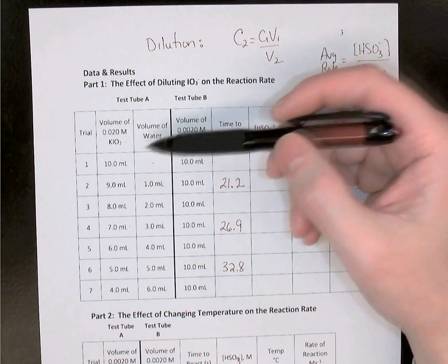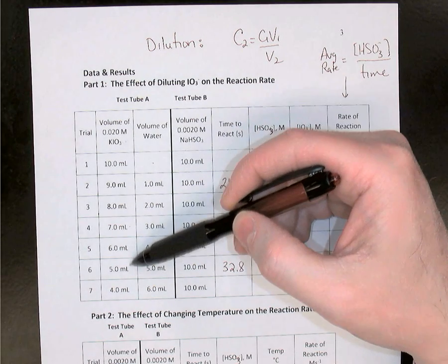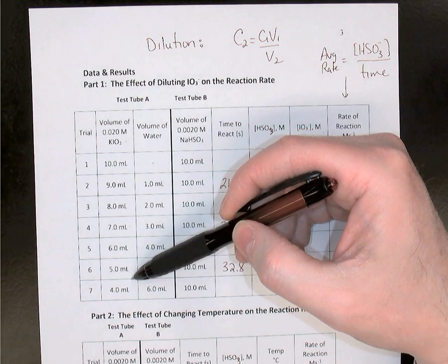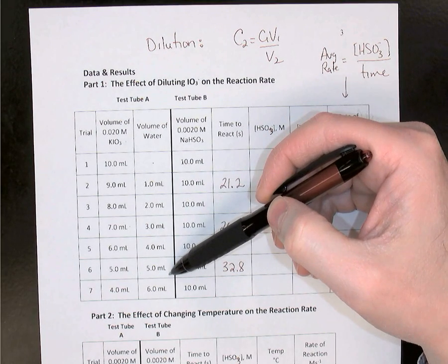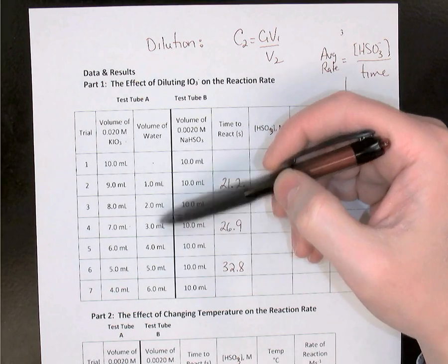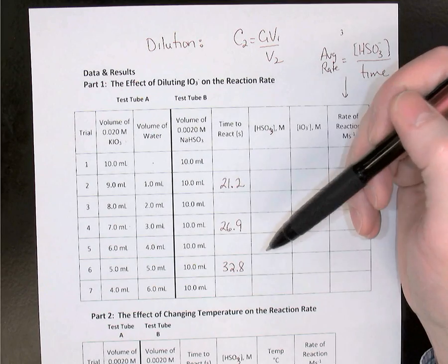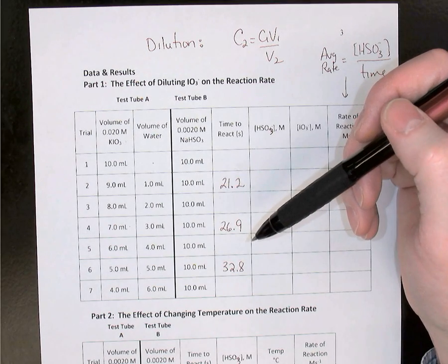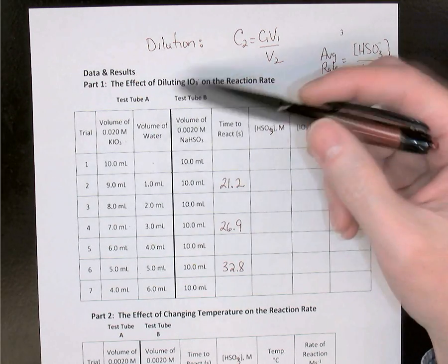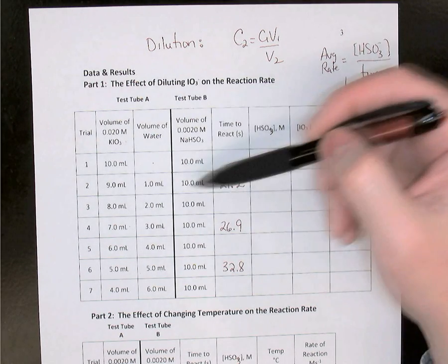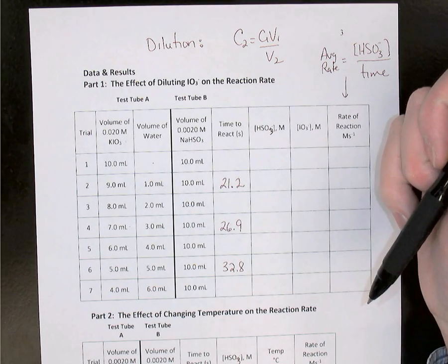We were decreasing the volume of KIO3 while adding water to compensate, so we were diluting the KIO3 in each successive trial. However, in each trial the total volume was kept at 20 mL.